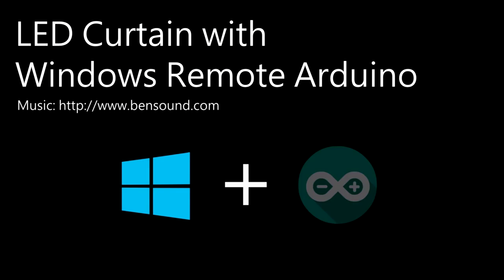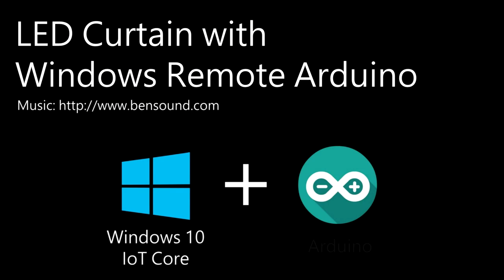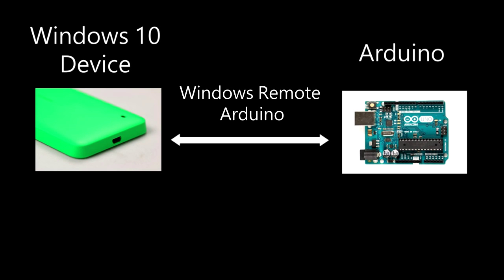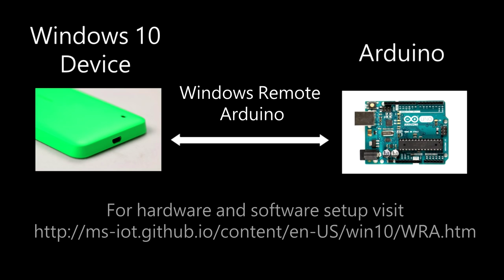Let's take a look at how Windows Remote Arduino enables an Arduino to run this LED curtain demo. For those unfamiliar, using the Windows Remote Arduino library allows a Windows 10 device to remotely control the pins of an Arduino device. Visit the following link to see complete hardware and software setup instructions for Windows Remote Arduino.